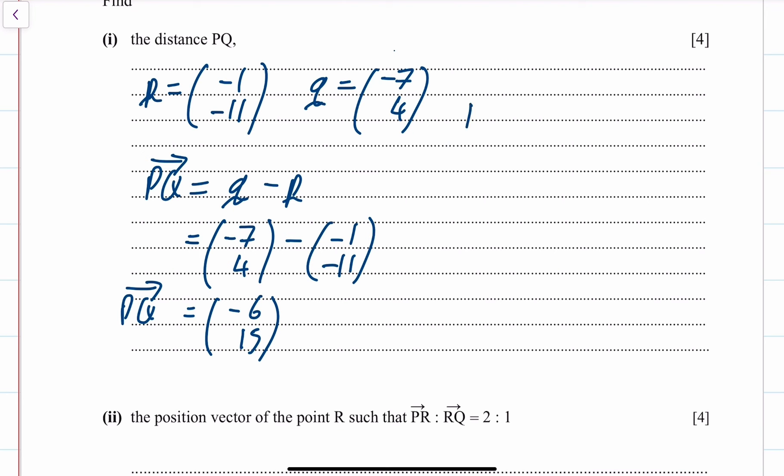Now the distance PQ is the modulus of those two things. The modulus of PQ. That's your minus 6 squared plus your 15 squared, and then square root of it.